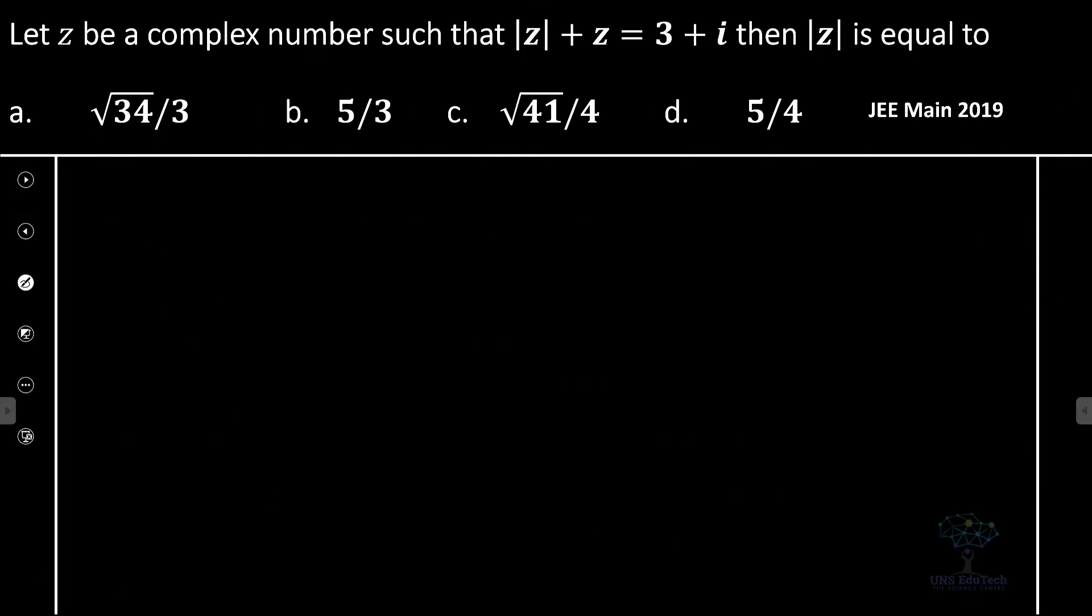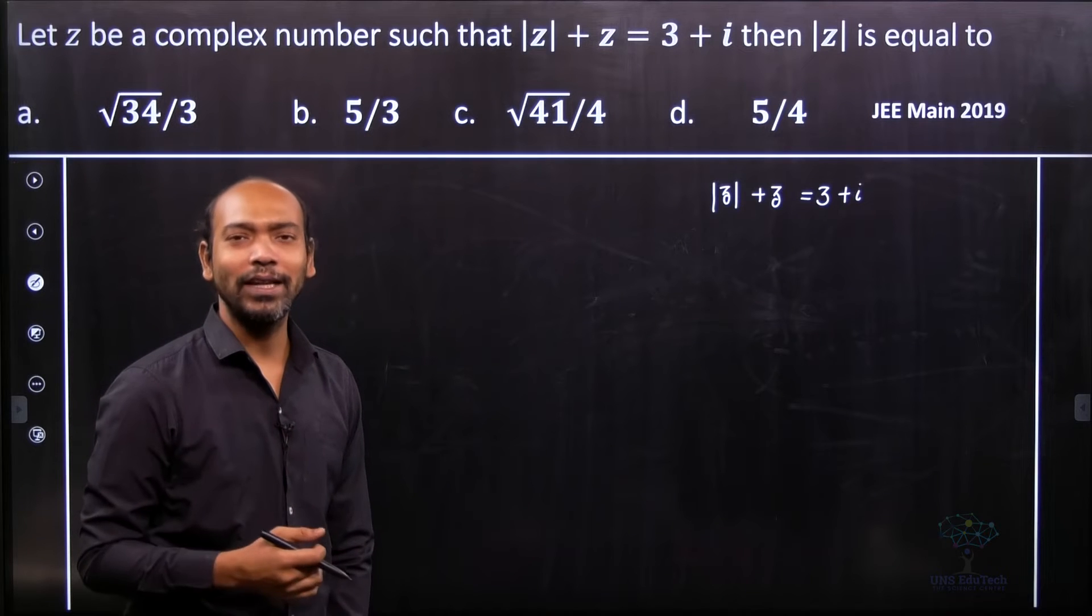Here it is given that the relation is mod z plus z equals 3 plus i. Now we are going to calculate mod z.